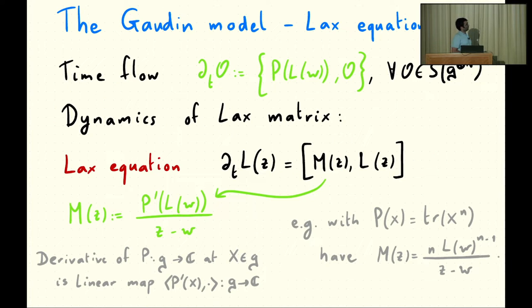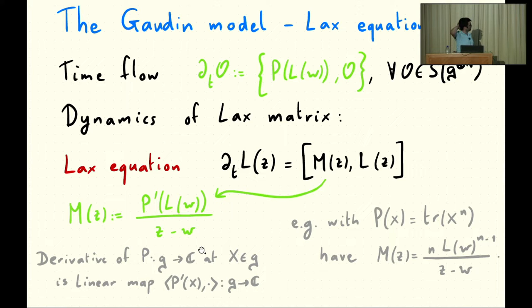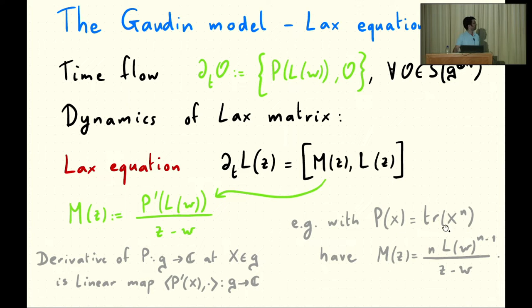To define the Hamiltonian of the Gaudin model, you pick a W and an invariant polynomial P, and define the Hamiltonian as P applied to the Lax matrix at W. This fixes a choice of Hamiltonian, and by this construction you get a large family of mutually commuting integrals of motion. P is applied to the auxiliary space — the matrix part — so you get a polynomial in the dynamical variables. Having the Hamiltonian, time evolution is just Poisson bracket with the Hamiltonian. In particular, the Lax matrix evolves according to the Lax equation, where M is this particular matrix related to the Lax matrix L at W.